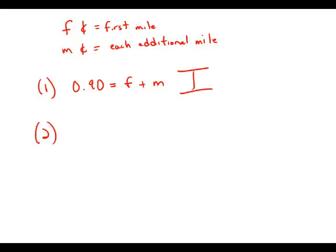Now, forget about statement number one. Statement number two tells us that it costs $1.20 to go four miles. So that $1.20 would be the first mile plus three additional miles.